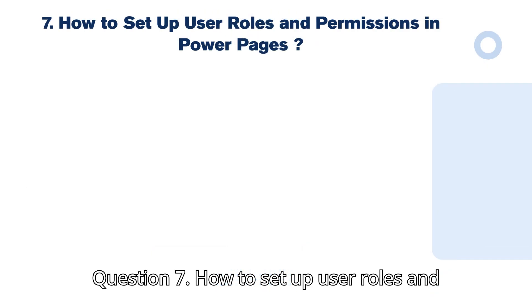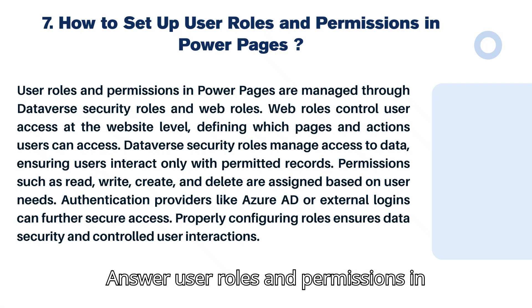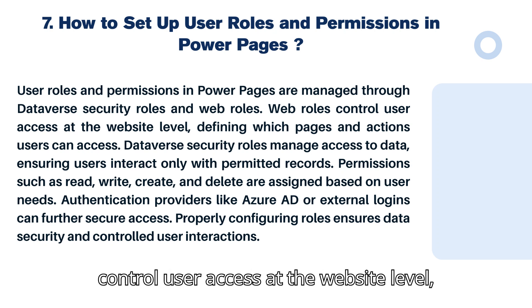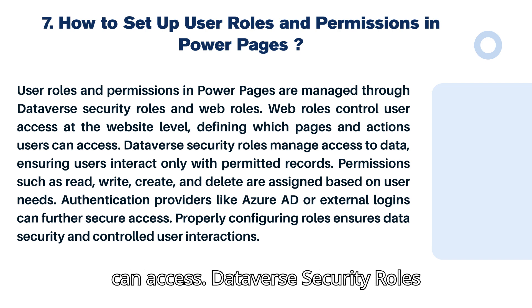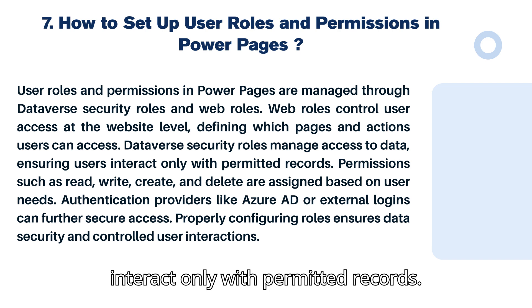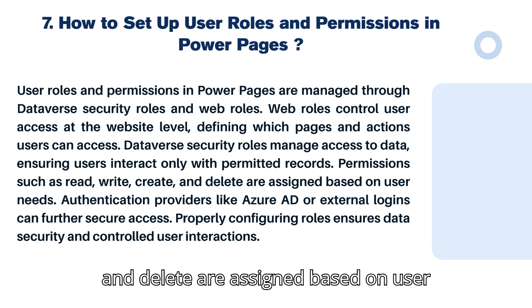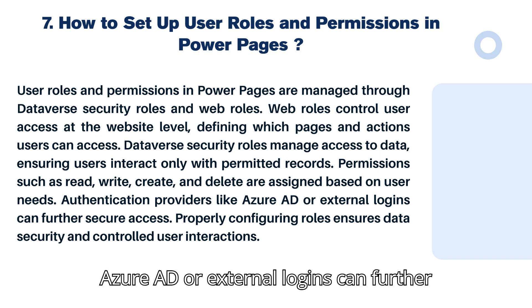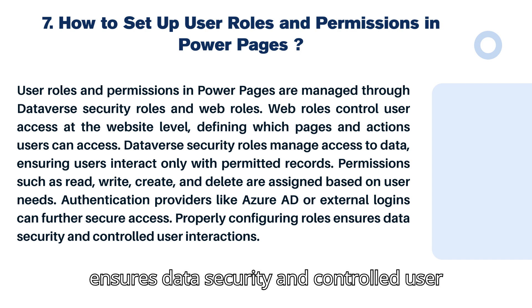Question 7: How do you set up user roles and permissions in Power Pages? User roles and permissions are managed through Dataverse security roles and web roles. Web roles control user access at the website level, defining which pages and actions users can access. Dataverse security roles manage access to data, ensuring users interact only with permitted records. Permissions such as read, write, create, and delete are assigned based on user needs. Authentication providers like Azure AD or external logins can further secure access.